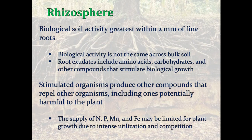Biological soil activity is greatest within two millimeters of fine roots. It's a very small, thin horizon, but if we think of the total surface area of our plant roots, then it can increase sort of exponentially. The biological activity is not the same across the bulk of the soil, and those root exudates stimulate biological growth. That interaction happens in this thin horizon. Stimulated organisms produce compounds that may protect the plant.